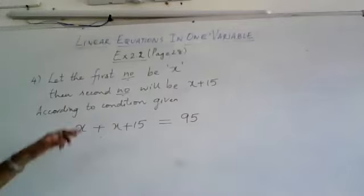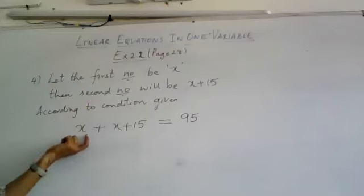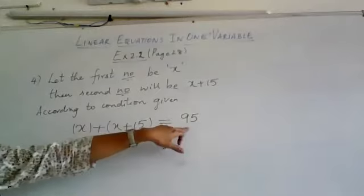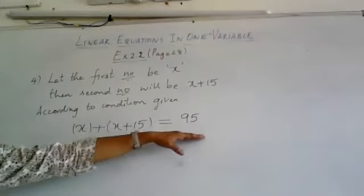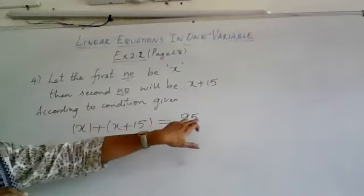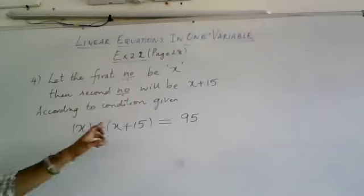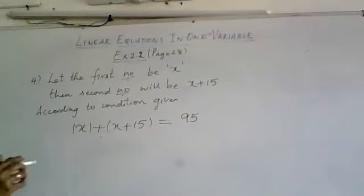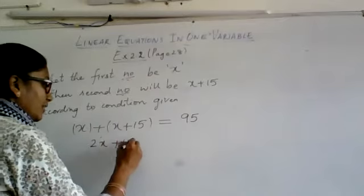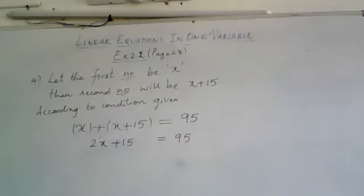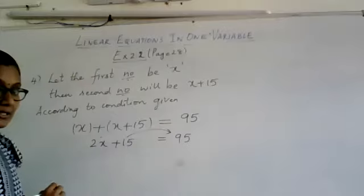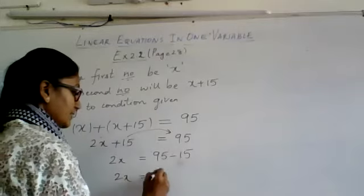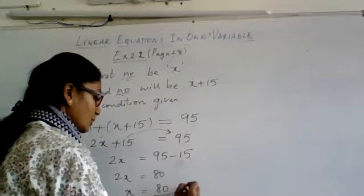I have used my condition to create the linear equation. The first number is x and the second number is x plus 15. When I add both of them I get 95. So the equation is very conveniently built: first number plus second number equals 95, because the sum is given as 95. Now we have a linear equation in one variable where x is the variable. So x plus x becomes 2x plus 15 equals 95. Transposing 15: 2x equals 95 minus 15, so 2x equals 80, therefore x equals 80 divided by 2 which is 40.